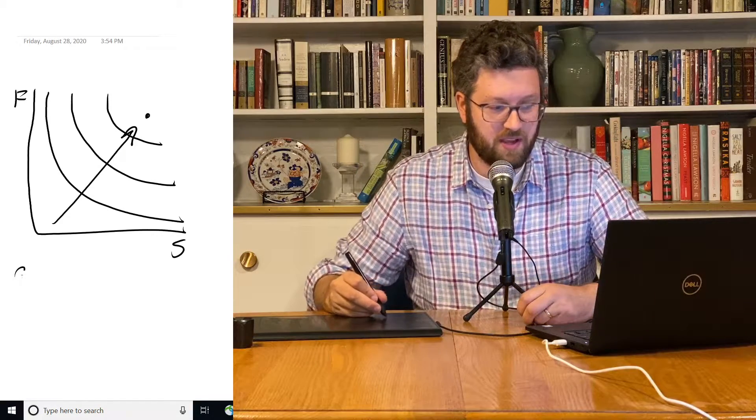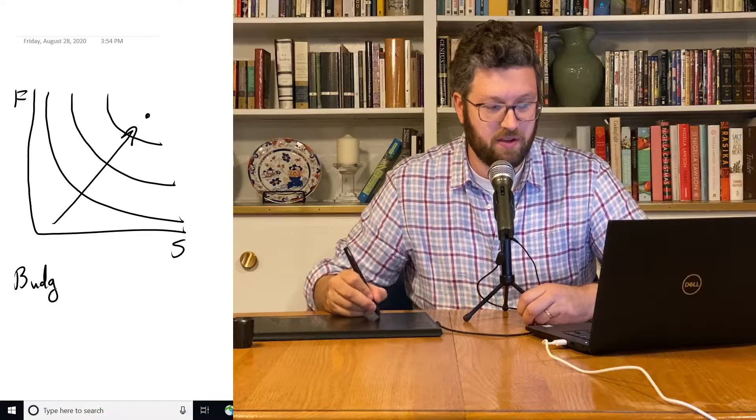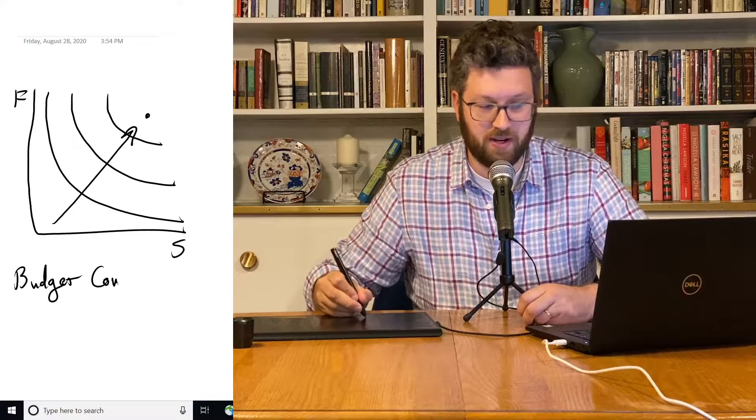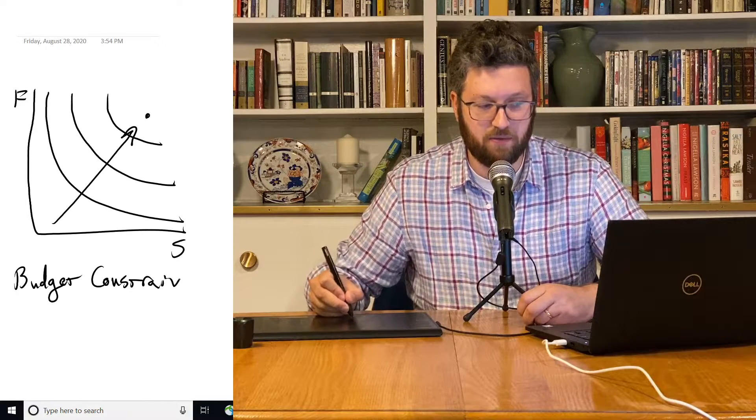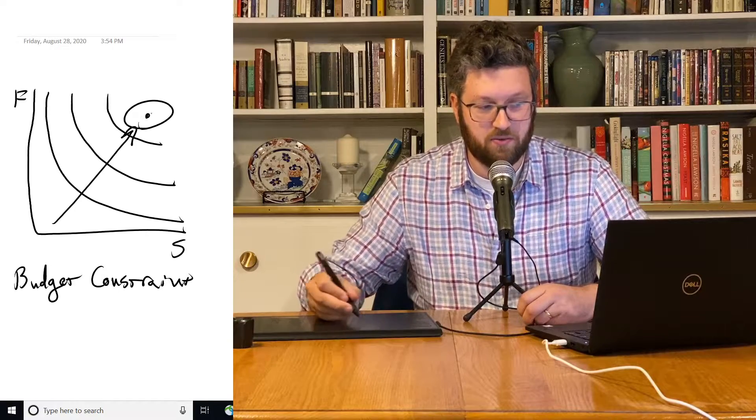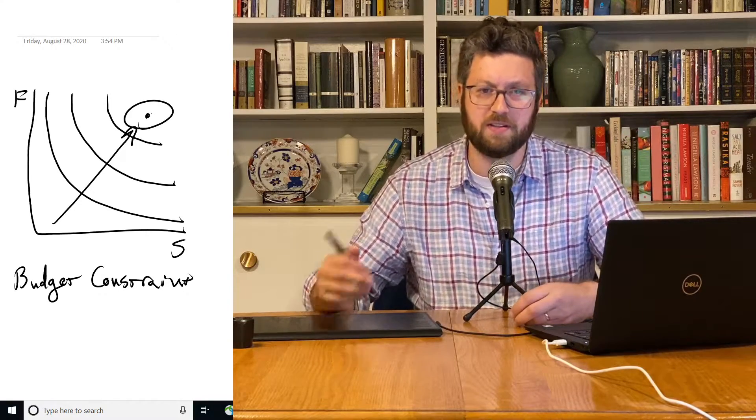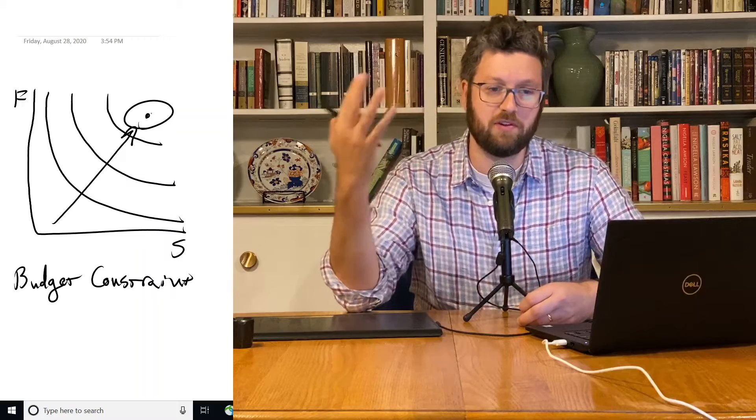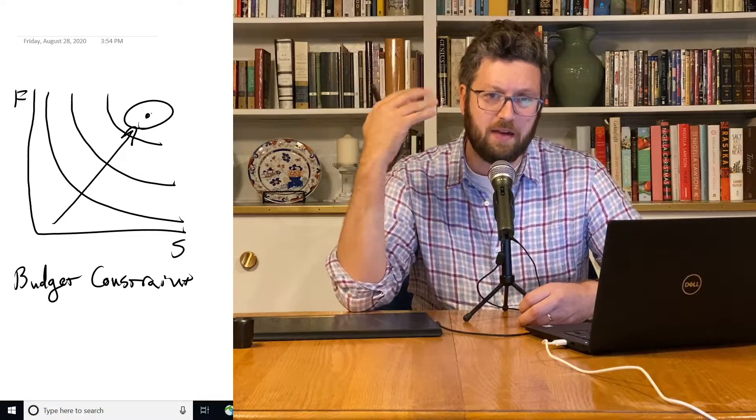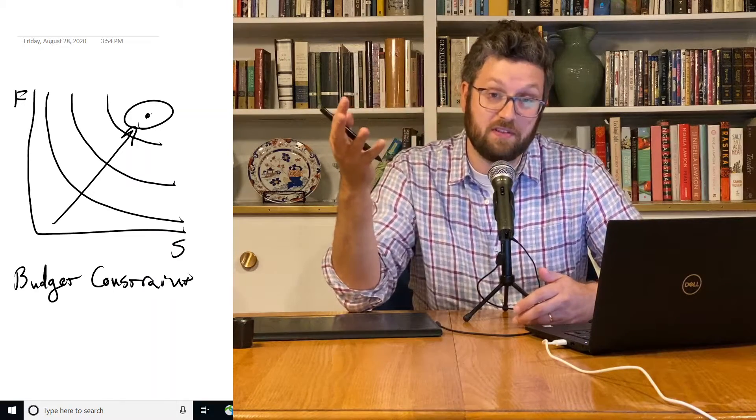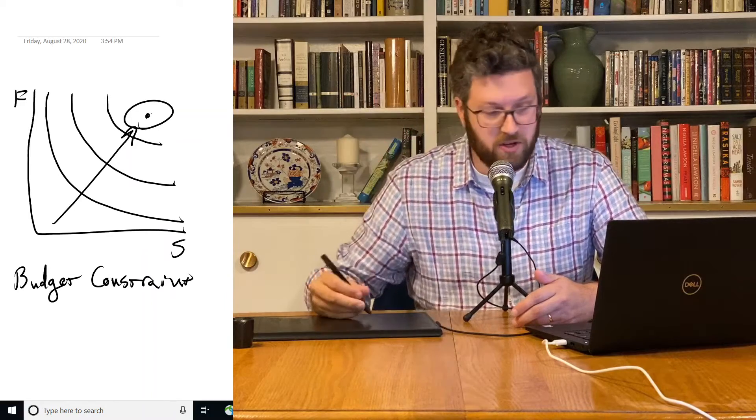And what we say is that consumers have a budget constraint. So they're not actually free to just go up to the upper right corner because they can't afford that much food and that much shelter. They have a certain amount of money. There's prices. And they have to decide what they're going to do with it.